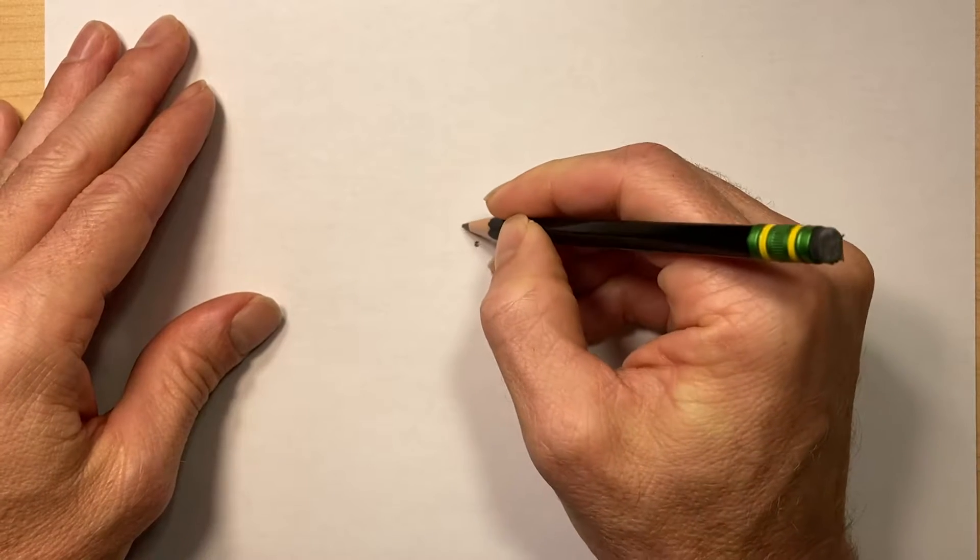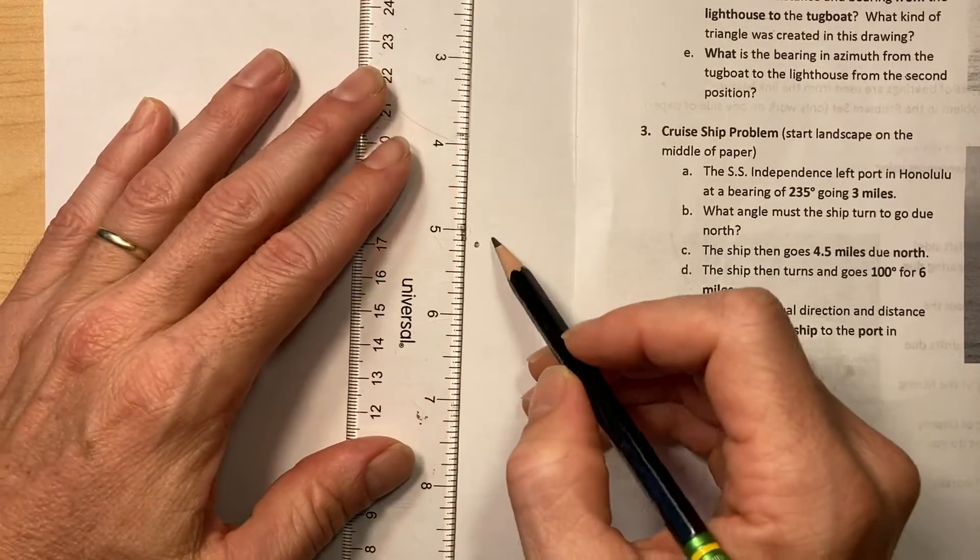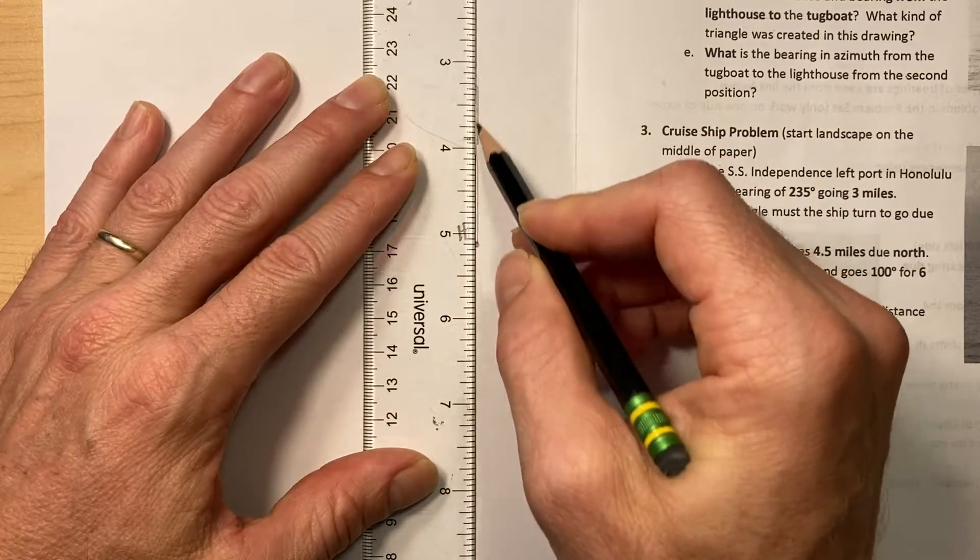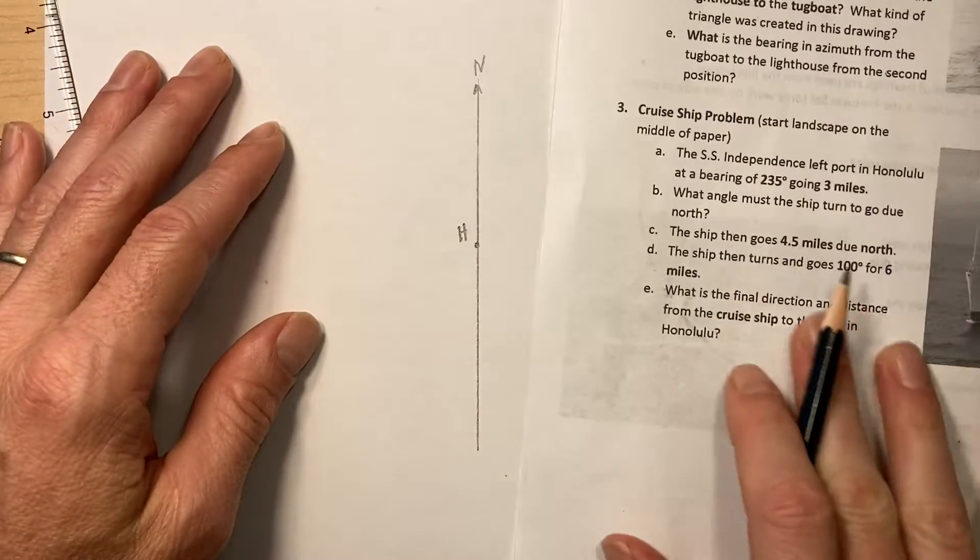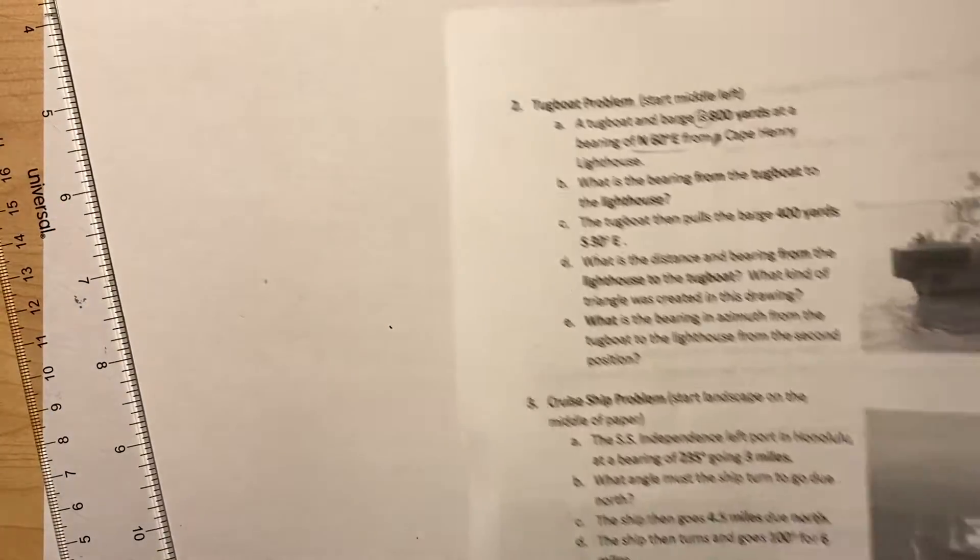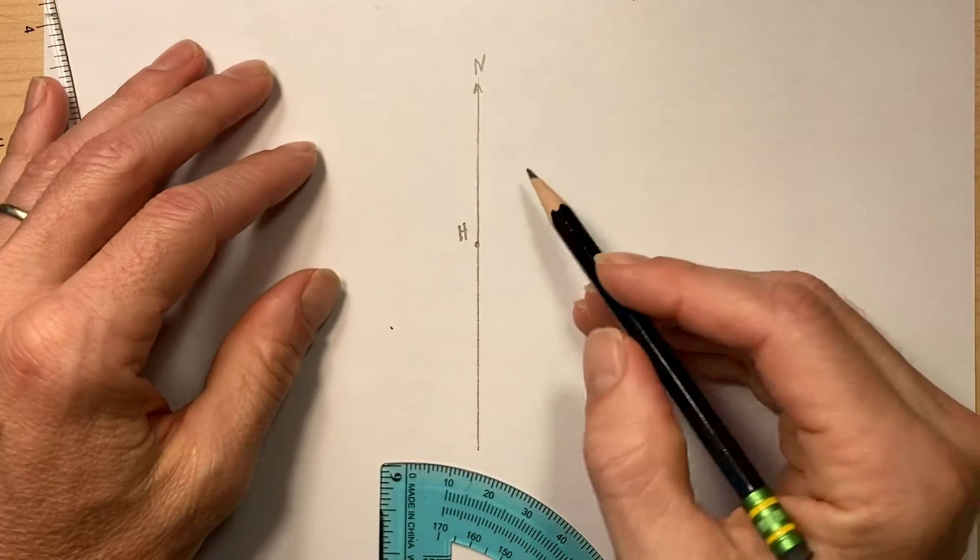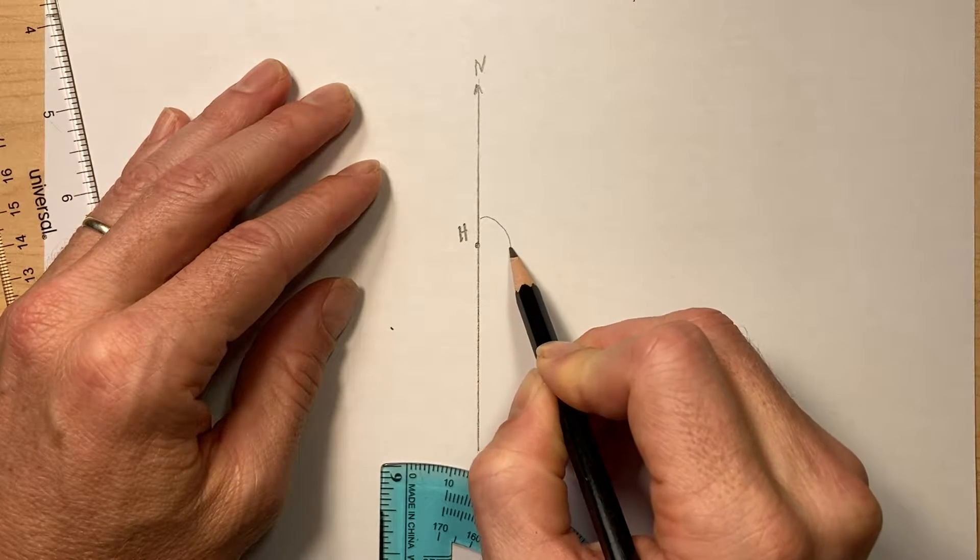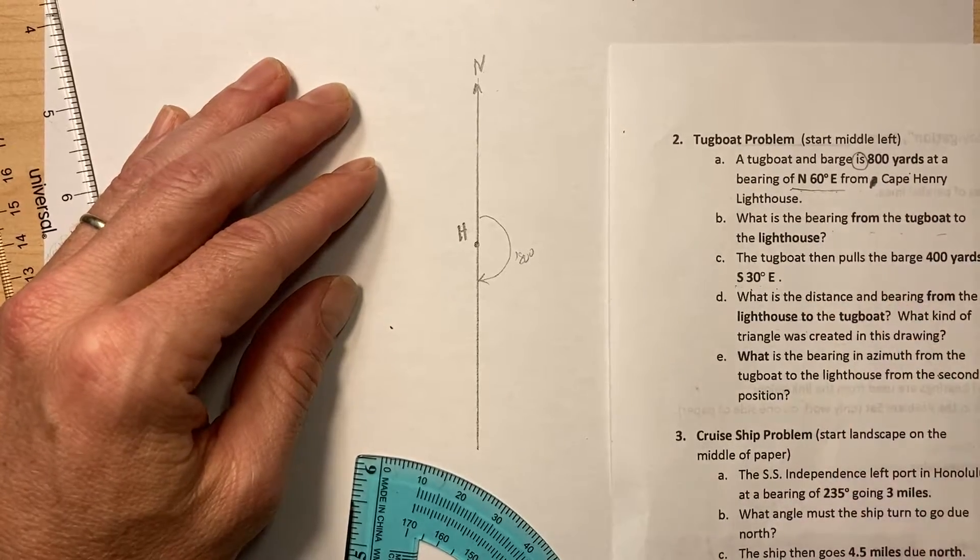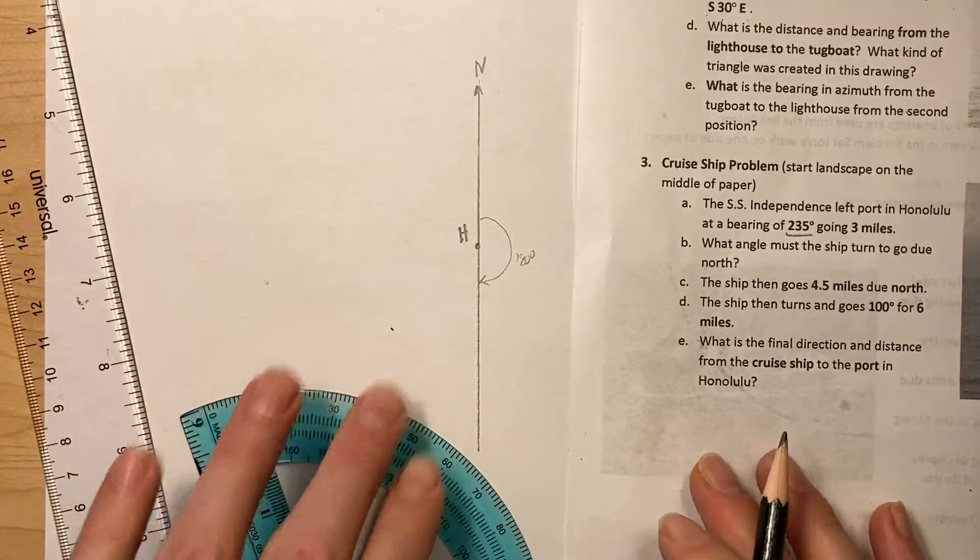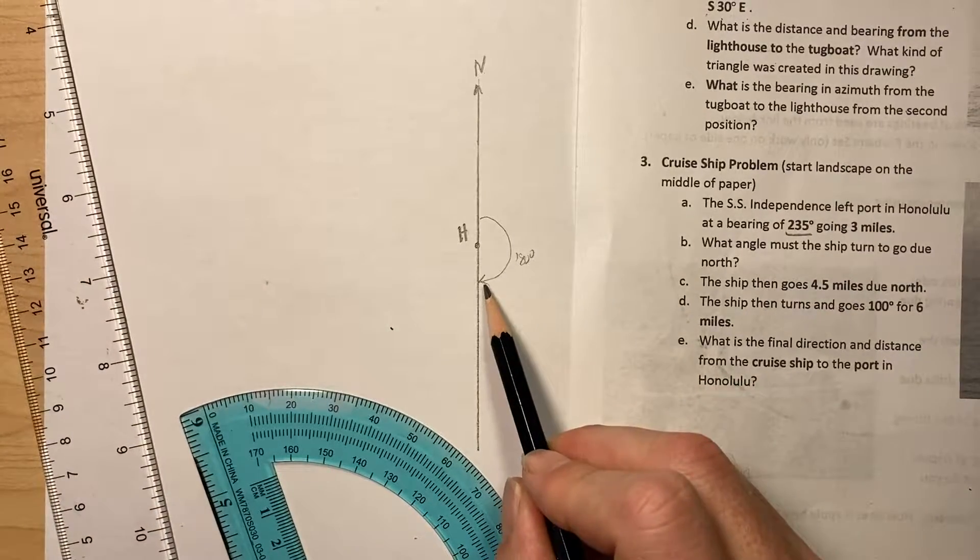So let's start in the center, and this is Honolulu. We're going at a bearing of 235 degrees, so I need a north-south line here. 235 degrees starts at zero and goes clockwise, so if we go 180 degrees that takes us due south, but we want 235. So 235 would be 180 plus a little bit more. If I take 235 and subtract 180, I'm going to get 55 degrees.